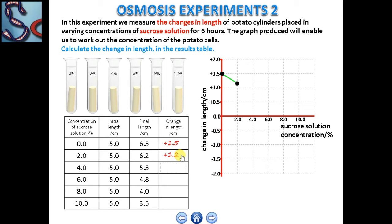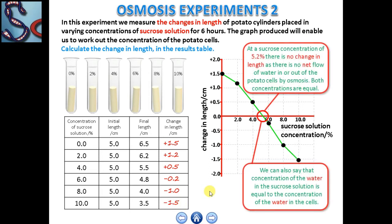The changes in length are: 1.2 cm, 0.5 cm, 0.2 cm, minus 1 cm, and minus 1.5 cm. At a sucrose concentration of 5.2%, there is no change in length as there is no net flow of water in and out of the potato cells through osmosis, and both concentrations are equal. The concentration of water in the sucrose solution equals the concentration of water in the cell.